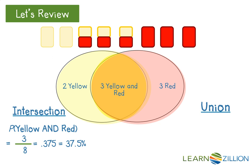Union is the cards that are yellow or red or both. To find the probability of the union, we could add the five yellow cards and the six red cards, but we would need to subtract the three yellow and red cards so we didn't count them twice. This is equal to 8 out of 8, or 100%.